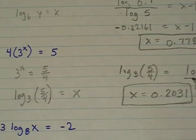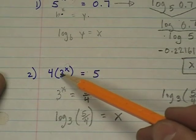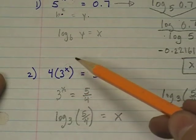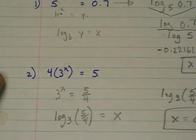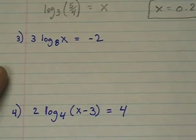And you could take this answer, 0.2031, and you could plug it in. 4 times 3 to the 0.2031, and you should get 5. Okay, third question.